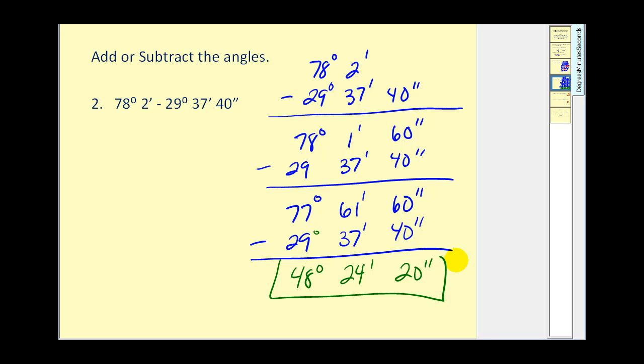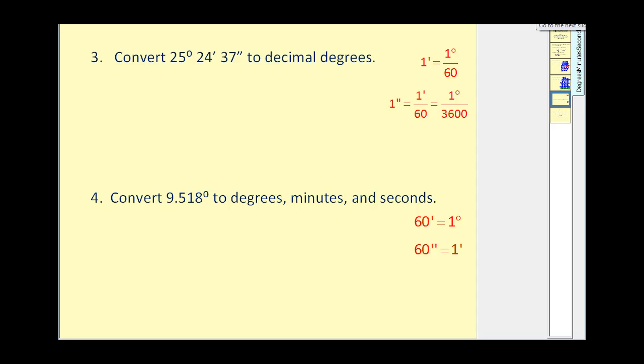Okay, let's take a look at two more examples. Let's convert 25 degrees, 24 minutes, 37 seconds to decimal degrees. So we'll need these conversions over here.